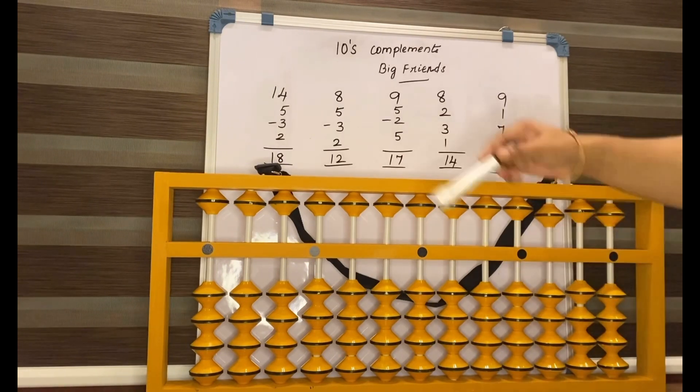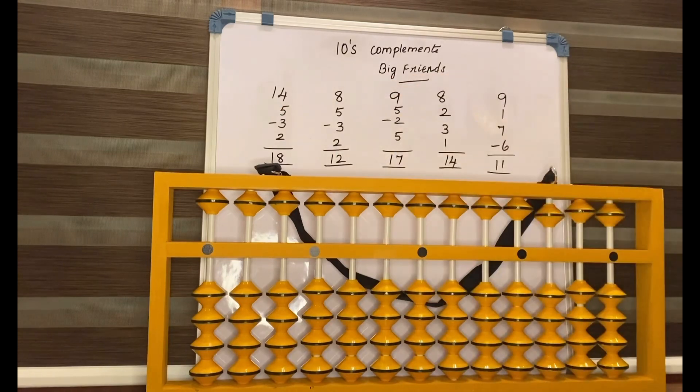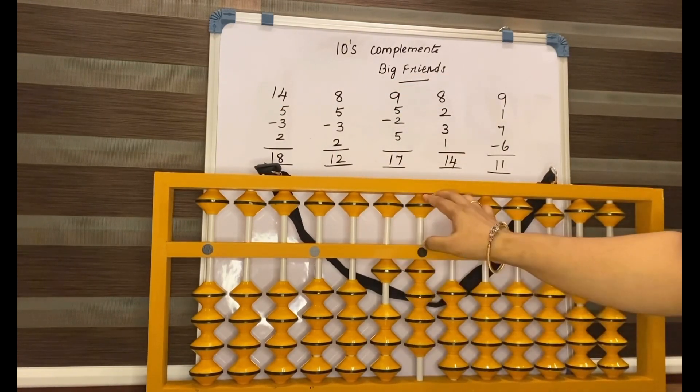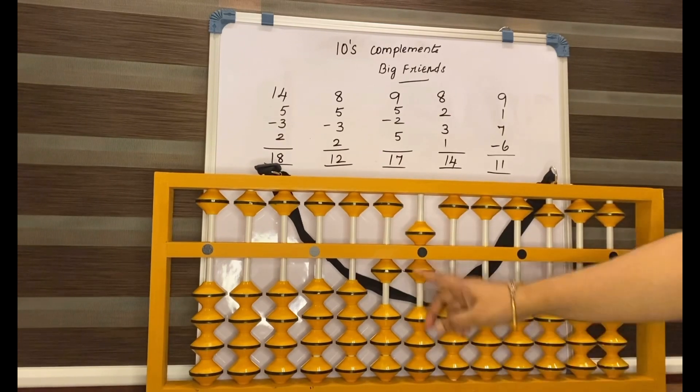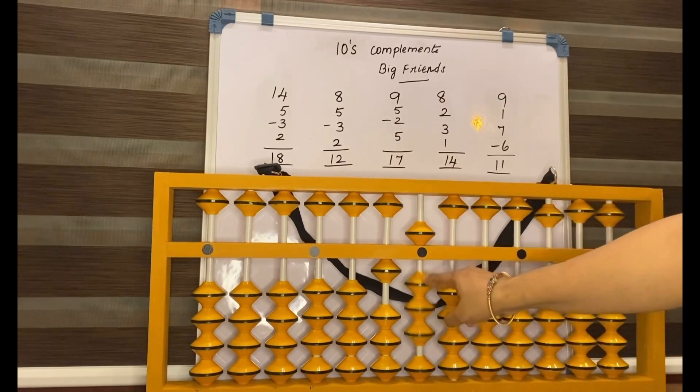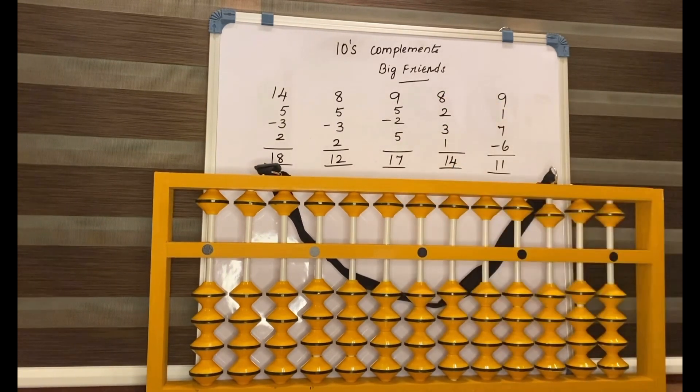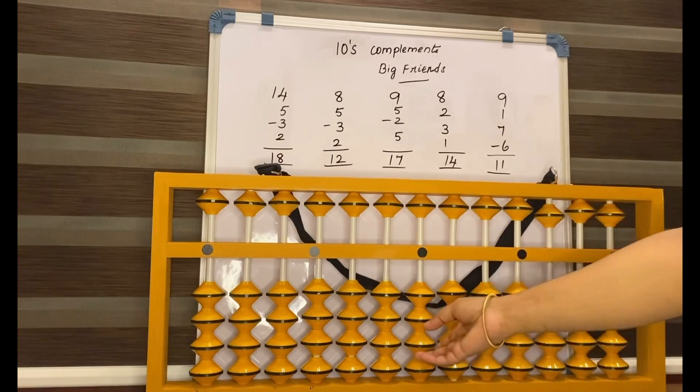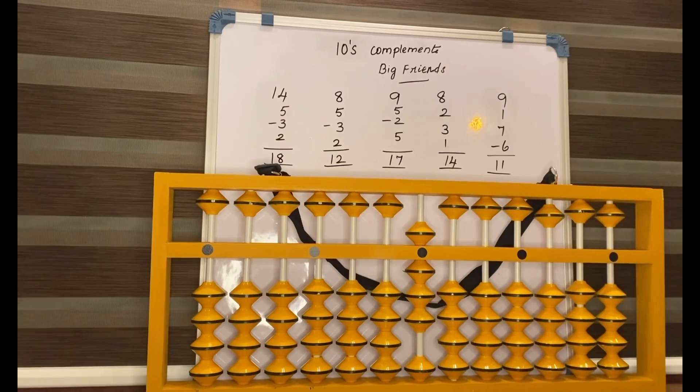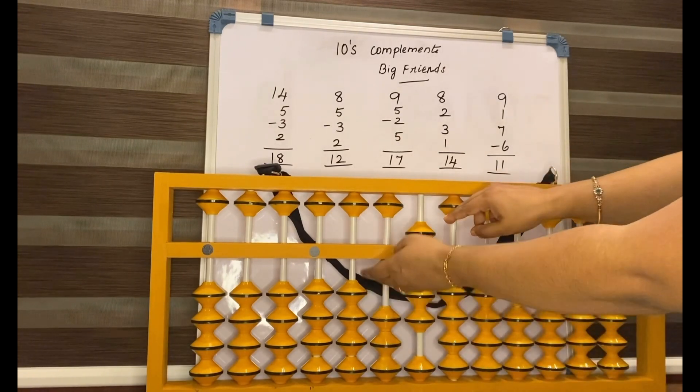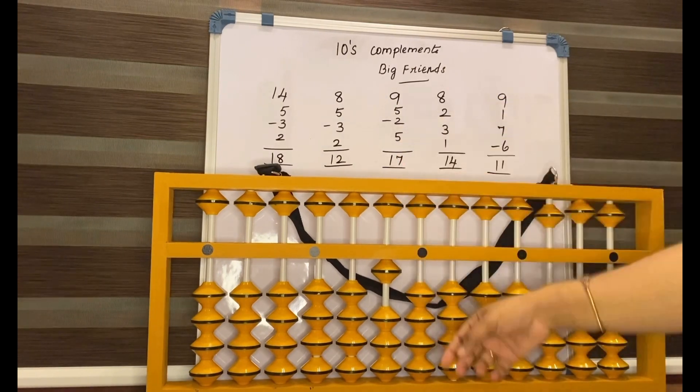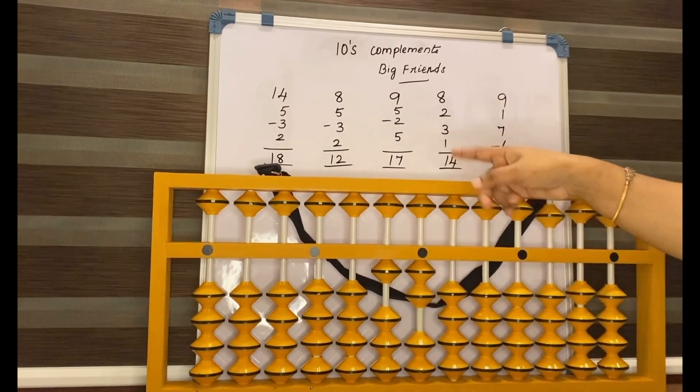Now just a small recap here. See what is the number here: 14, 5 less 3, equals 2. Now the answer is 18. Now do 0 here, 8, 5. How to add 5 here? Add 10, less 5, less 3, equals 2. Answer is 12.